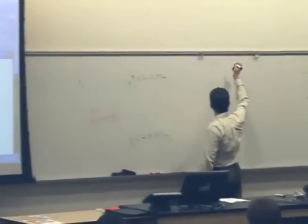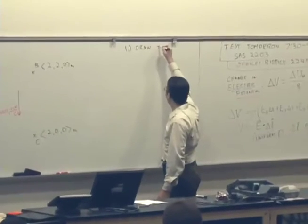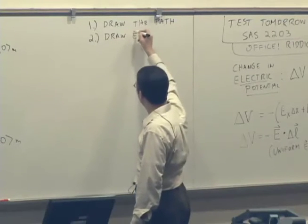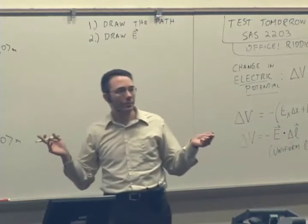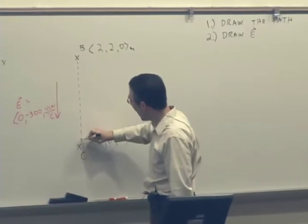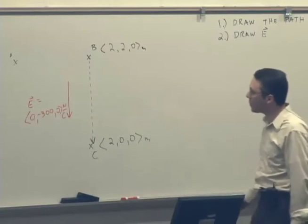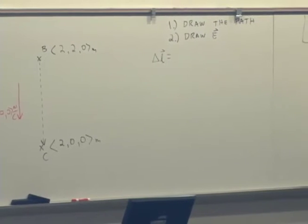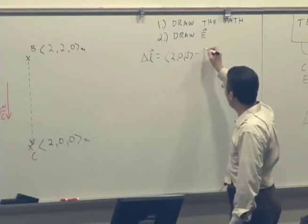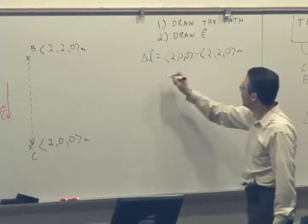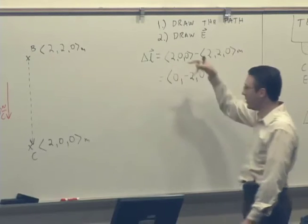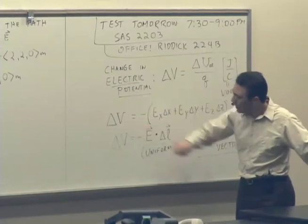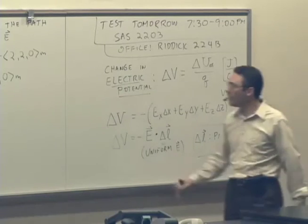Step one in any of these problems is draw the path — draw the vector from the initial point to the final point. Step two is draw the electric field, which is given to us. The path points from B to C, so I draw a path vector from B to C. I can calculate what this path vector is: delta L equals C minus B, final minus initial. So (2, 0, 0) minus (2, 2, 0) meters gives us (0, −2, 0) meters. It has a negative Y component — it's pointing downward. The change in potential is the negative of the dot product of the electric field and the path vector, so we have a negative out front.